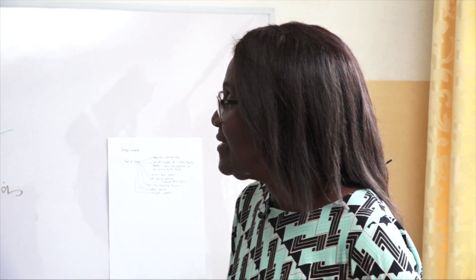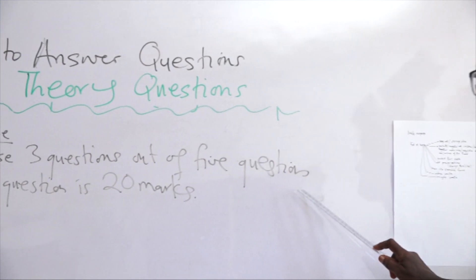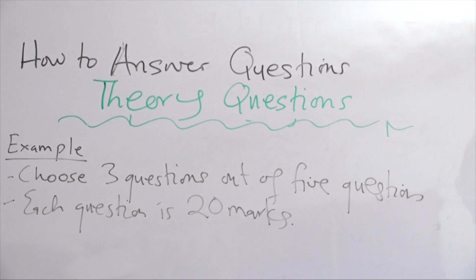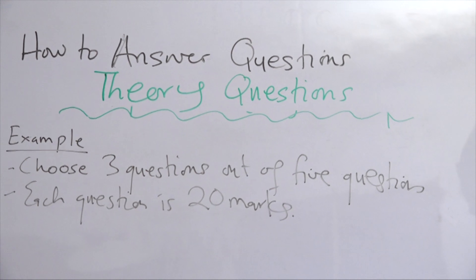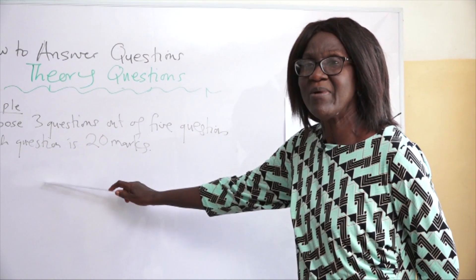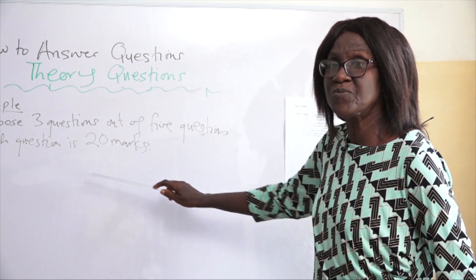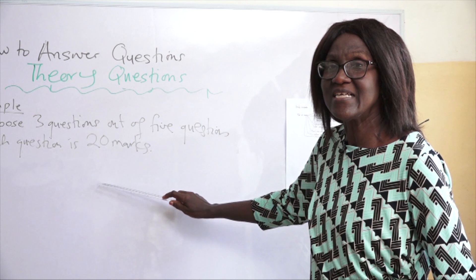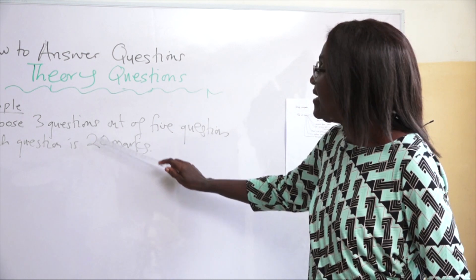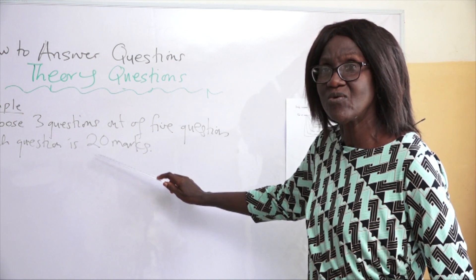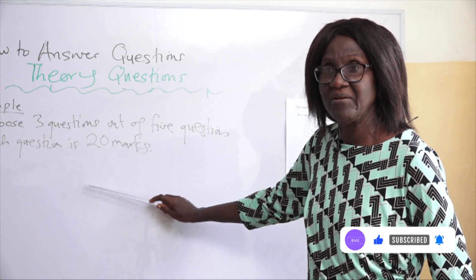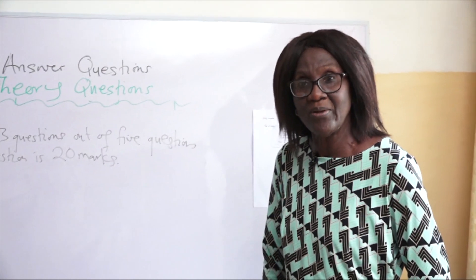For theory questions, for example if you must choose three questions out of five and each is worth 20 marks: if you know two questions very well, don't spend all your time on just those two. You will never get more than 20 marks on one question. Answer the questions you know well first, then for the third question, look at the remaining ones and put down something on the one you have at least a little idea about.